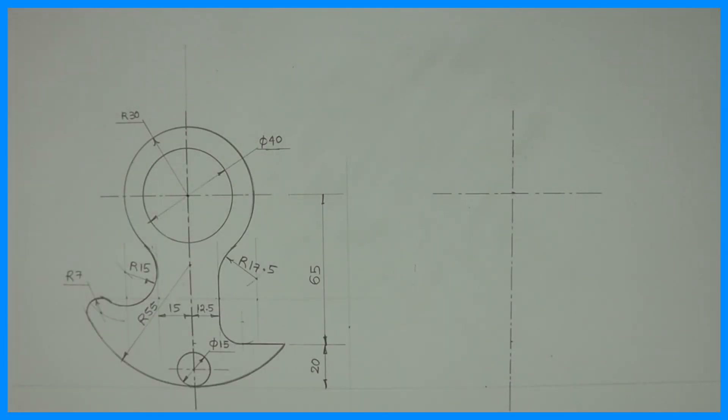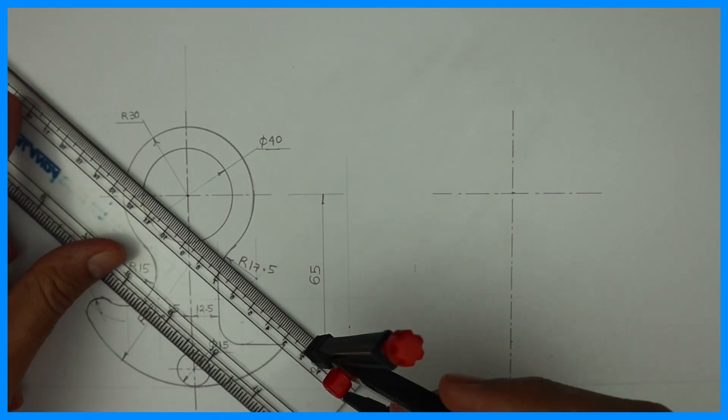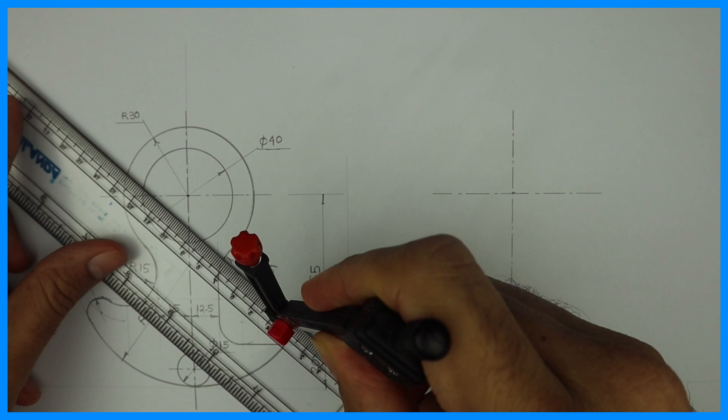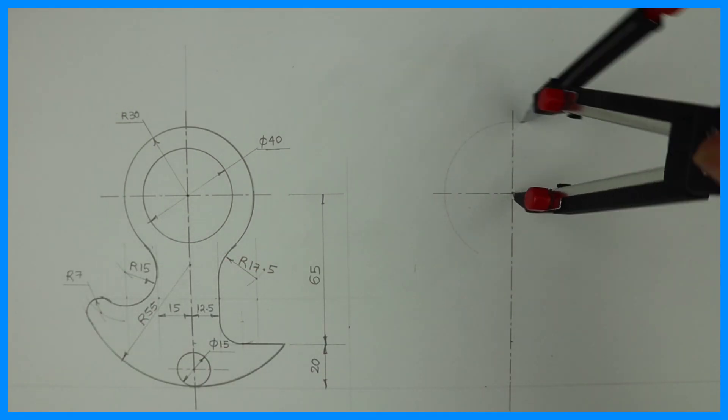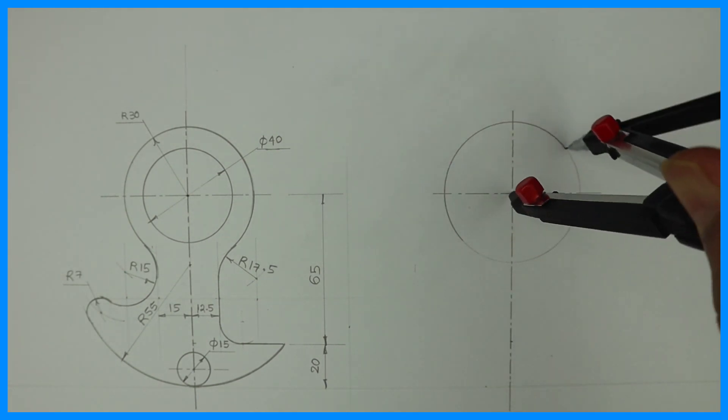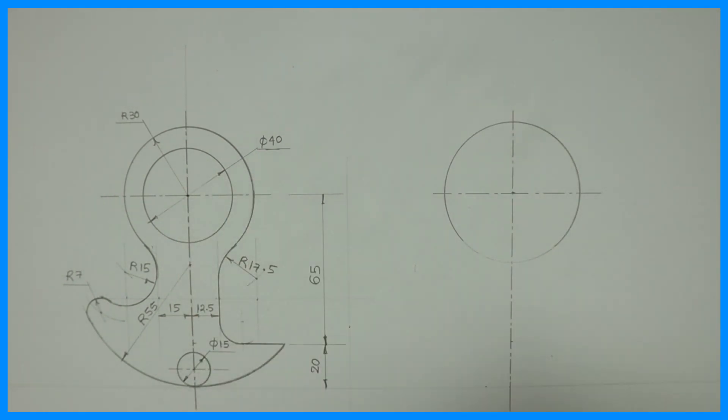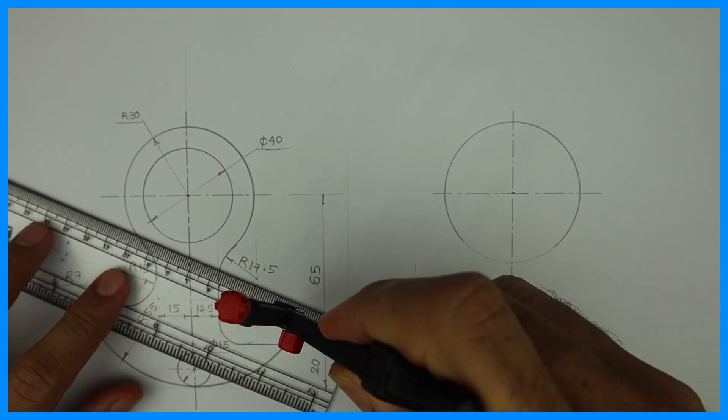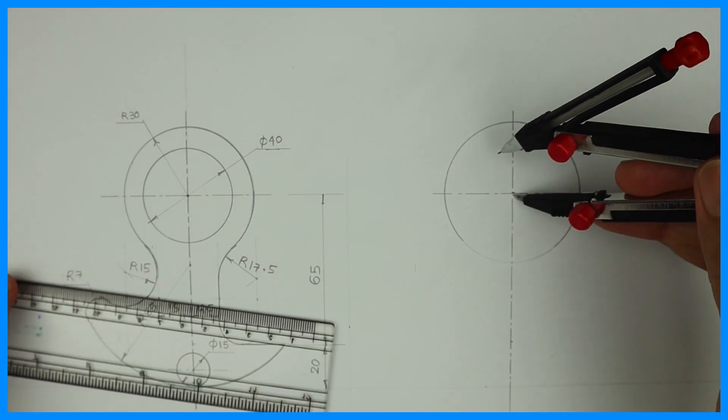Now we will draw radius 30 and radius 20. See this, radius 30. Now we will draw radius 20, that is diameter 40.